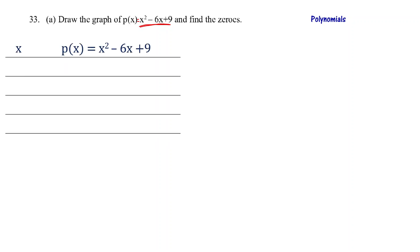To draw the graph, first we find the values of the polynomial for different values of x. Taking x = 1: p(1) = 1² - 6×1 + 9 = 1 - 6 + 9 = 4.